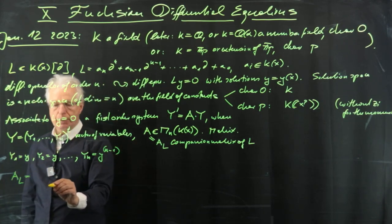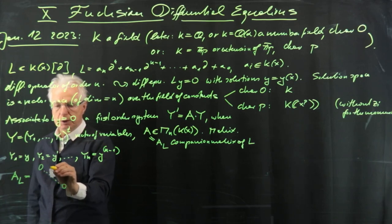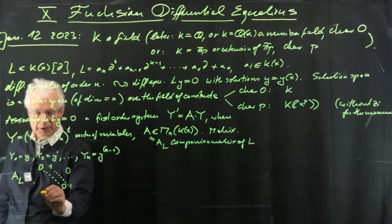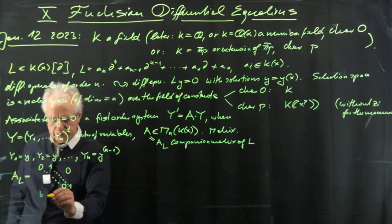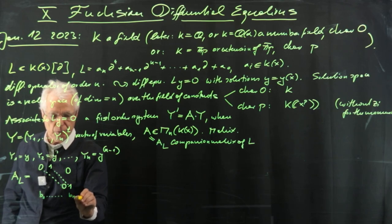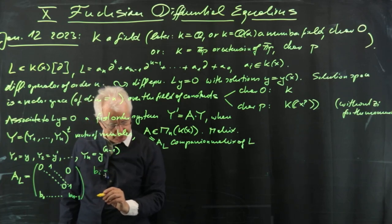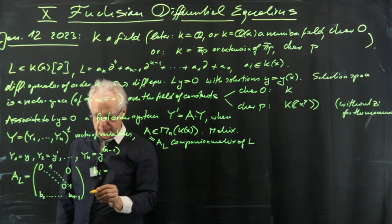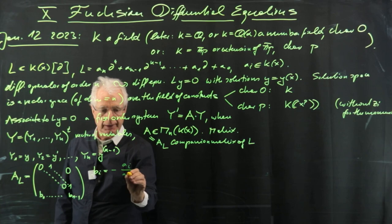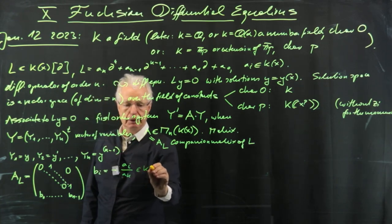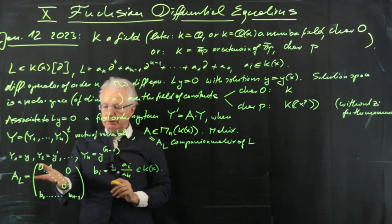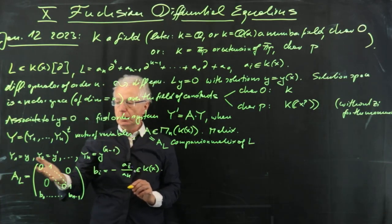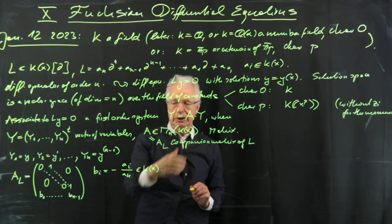How do you go from L to A? Sometimes I write this as A_L and call it the companion matrix of L. You take y_1 = y, y_2 = y', ..., y_n = y^{(n-1)}. The matrix A_L has zeros on the main part, ones on the first subdiagonal, and the last row contains b_0 up to b_{n-1}, where b_i = −a_i / a_n — an element of k(x). Here a_n is non-zero.